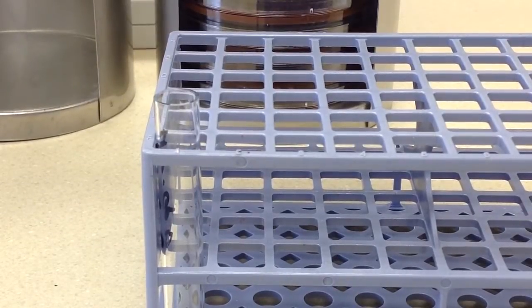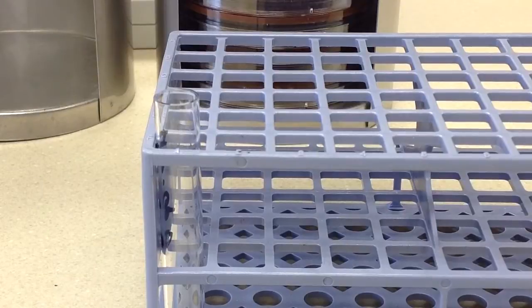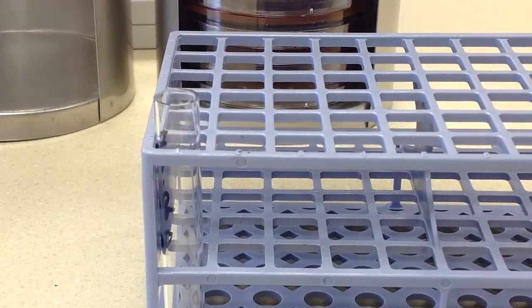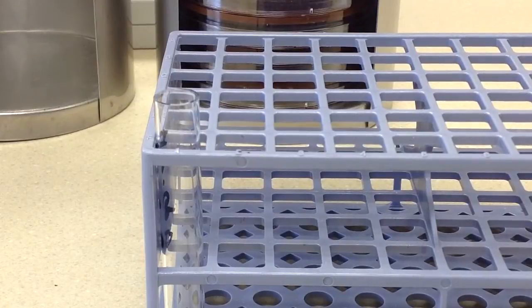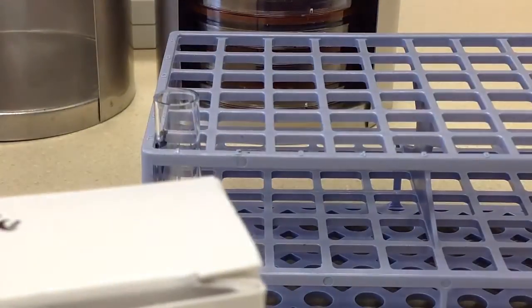In this video, we are going to take a look at doing the Hippurate disc test. This test is used to help identify Streptococcus agalactiae, otherwise known as Group B Streptococcus.